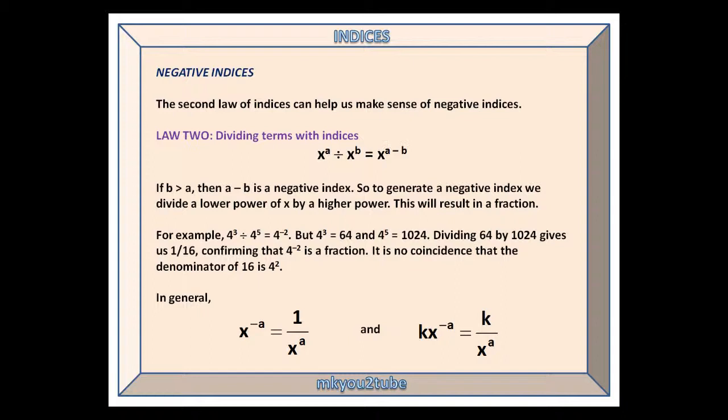For example, 4^3 ÷ 4^5 = 4^(-2). But 4^3 is 64, and 4^5 is 1024. Dividing 64 by 1024 gives us a sixteenth, confirming that 4^(-2) is a fraction. It is no coincidence that the denominator of 16 is 4 squared.